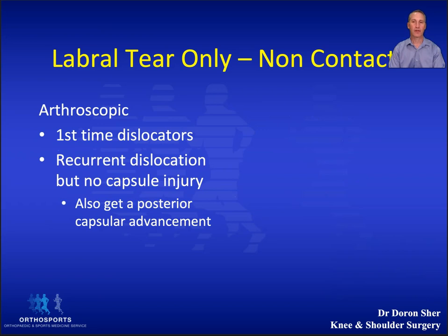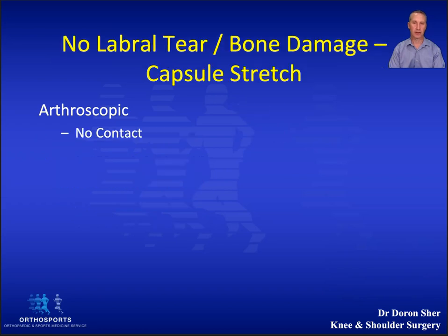In the non-contact athlete without a capsule injury or bone loss, most of the time an arthroscopic stabilization will be offered, which always includes an element of capsular tightening. A HAGL lesion always requires open surgery.